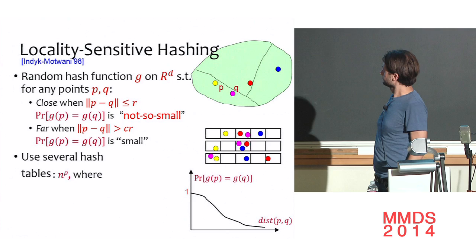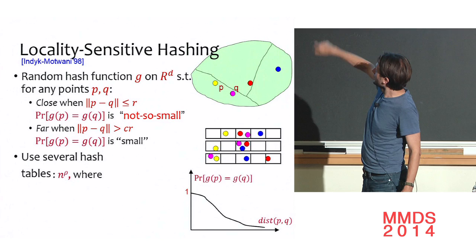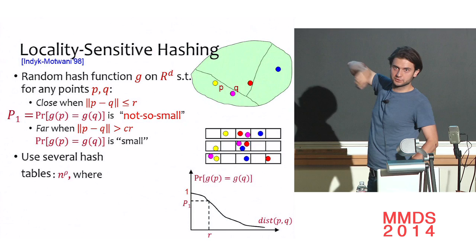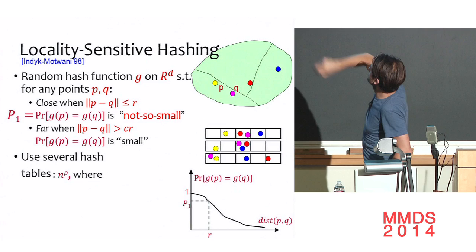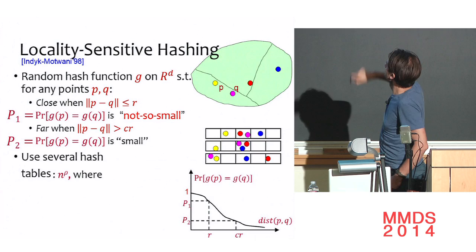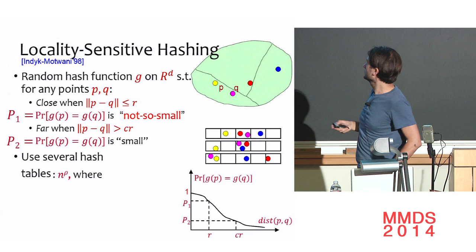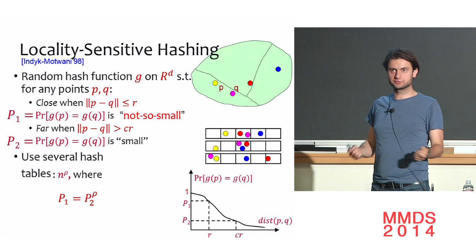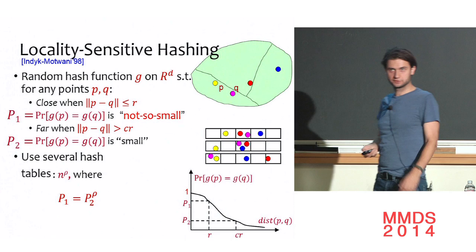How many hash tables do we need? Some n^ρ, where n is the dataset size and ρ is a parameter measuring quality of the space partition. Specifically, P1 is the close collision probability, P2 the far collision probability, and ρ satisfies ρ = log(1/P1) / log(1/P2). The bigger the gap between P1 and P2, the smaller ρ, and the fewer hash tables are needed.